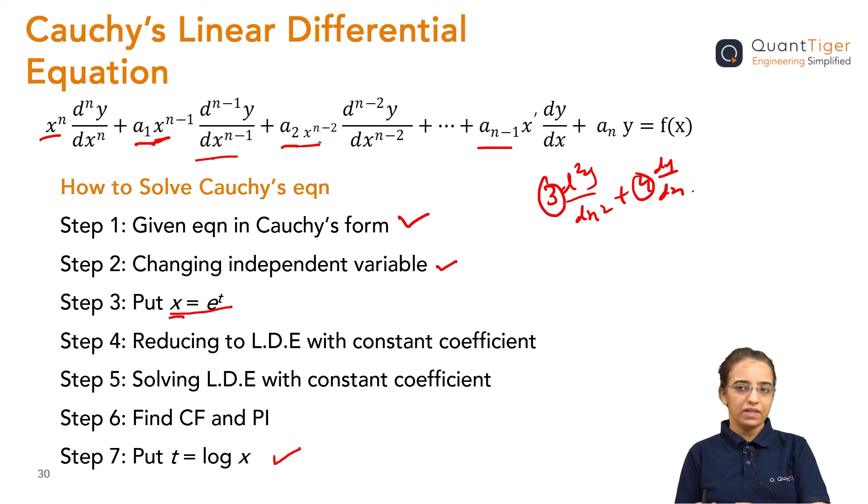We have to convert that t ke form mein, that in that we have to convert it back. Again in the last we will be keeping t is equal to log x, that is also important step. This is how we are gonna follow the steps for solving the Cauchy's differential equation.